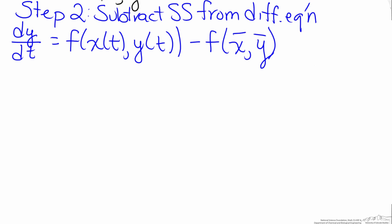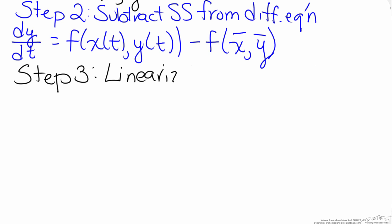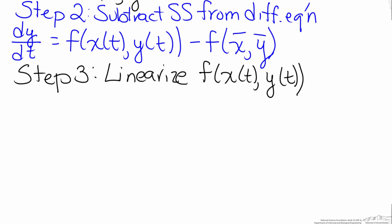The third step is to now begin the linearization process. We'll start by linearizing the term or terms that need to be linearized, which is represented by the function of x(t) and y(t). The second term is evaluated at steady state — those values are now constants and therefore do not need to be linearized.